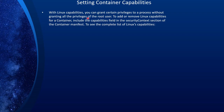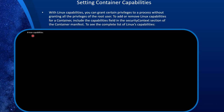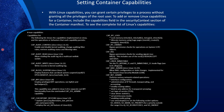With Linux capabilities, we can grant certain privileges to a process without granting all the privileges of the root user. To add or remove Linux capabilities for a container, include the capabilities field in the security context section of the container manifest. To see the complete list from the command line, run `man capabilities`. You can also run the capabilities command from inside the container to see what it inherited or what you've set.